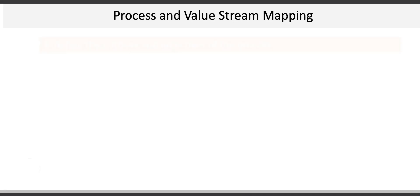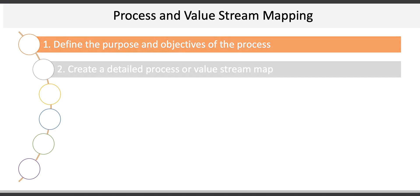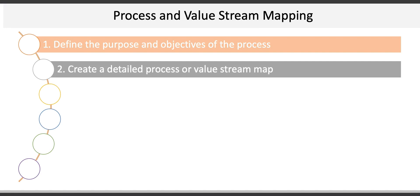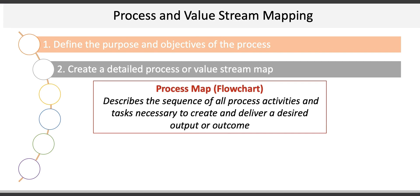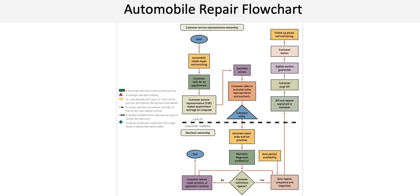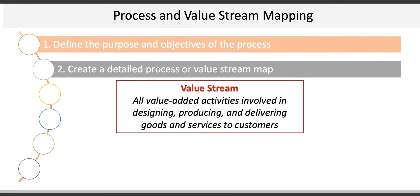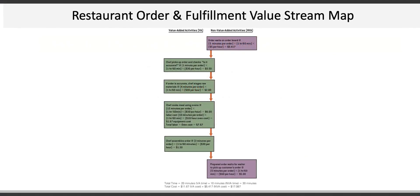The first of the six activities is defining the purpose and objectives of the process — essentially, beginning with the end in mind. Next is to create a detailed process map or value stream map. A process map or flowchart describes a sequence of all process activities and tasks necessary to create and deliver a desired output or outcome. Here's an example of a flowchart for an auto repair shop, and another flowchart example for a restaurant order and fulfillment process. A value stream is all of the value-added activities involved in designing, producing, and delivering goods and services to customers, and here's an example of the value stream for the restaurant order and fulfillment process.